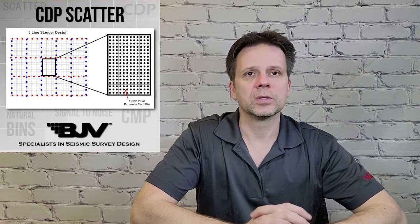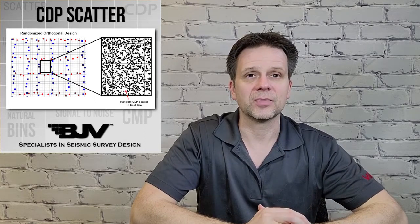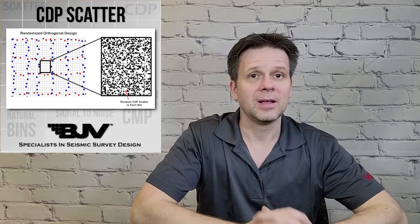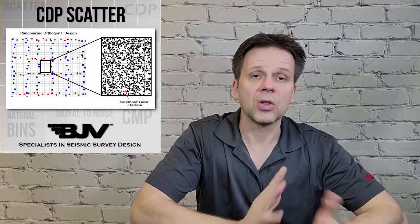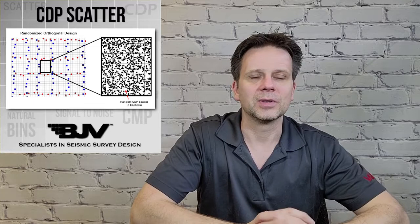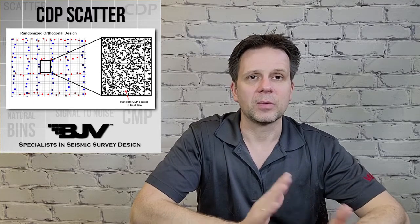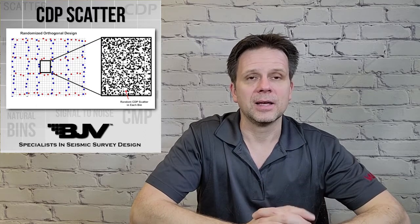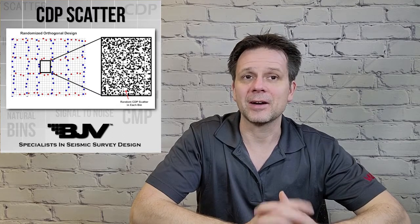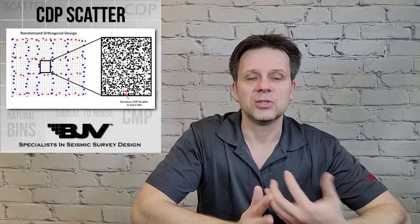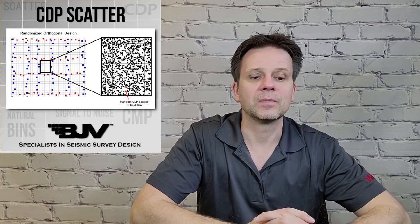In the reality of the real world, we're always having to move points based on where we can put them on the surface of the earth, depending on obstructions, farms, water, environmental issues, and all the things we deal with in the real world. You end up getting more of a random CDP scatter, which I would say we see more often than not. But you can also invoke an algorithm to do fine shifts in your grid or in your source and receiver points to get that random distribution intentionally.